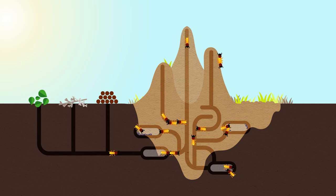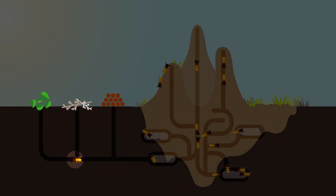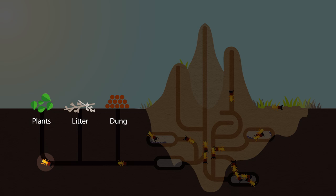So termites go out. They forage for plant material, which they find in actual plants or litter or animal dung. They bring back that plant material to the nest.